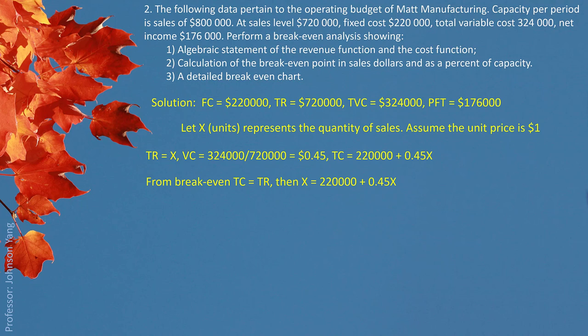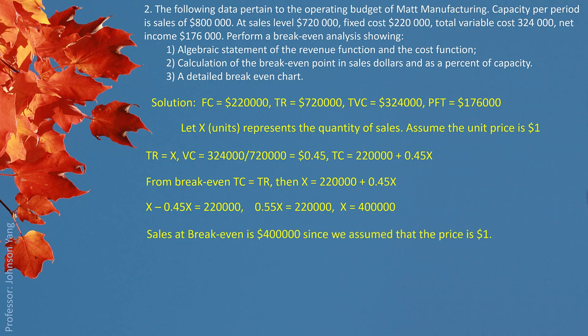Putting them together, we set X equal to $220,000 plus $0.45X. Solving this, X equals 400,000 units. This quantity is based on the $1 price assumption, but it gives us breakeven sales of $400,000 — which is the real situation. It doesn't necessarily reflect the actual quantity of the product, but it represents sales in dollars.